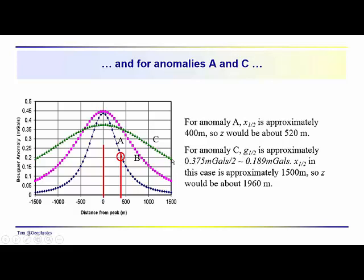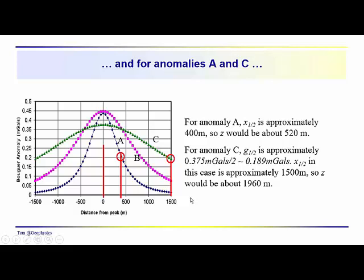G_1/2, well, we just about go off the scale here, but we can see enough of the anomaly, we see where it falls off to one-half of its maximum value. That's at about 1,500 meters, so that gives us an approximate depth of about 1,960 meters. So how did you do? It's pretty straightforward. And we're just taking advantage of this relationship again just to get information about the object from the shape of the anomaly.